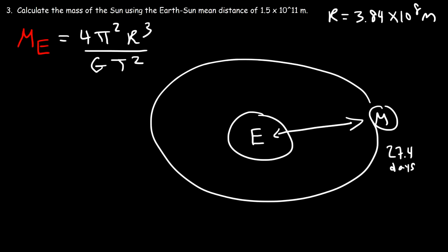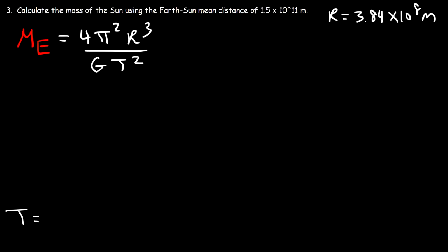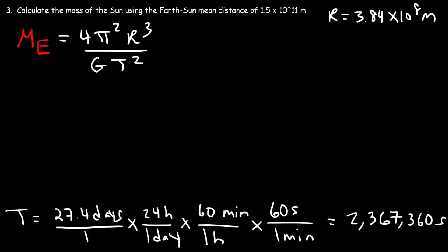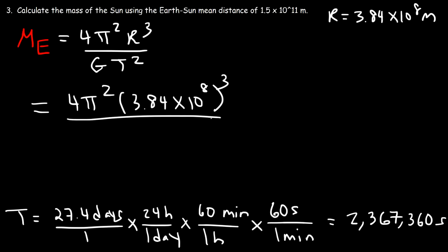Converting the Moon's period to seconds: T = 27.4 days × 24 × 60 × 60 = 2,367,360 seconds. Now plug into the formula: M_earth = 4π² × (3.84×10⁸)³ / (G × 2,367,360²).